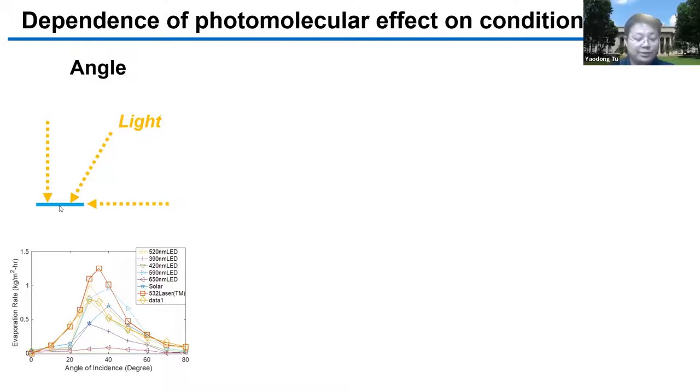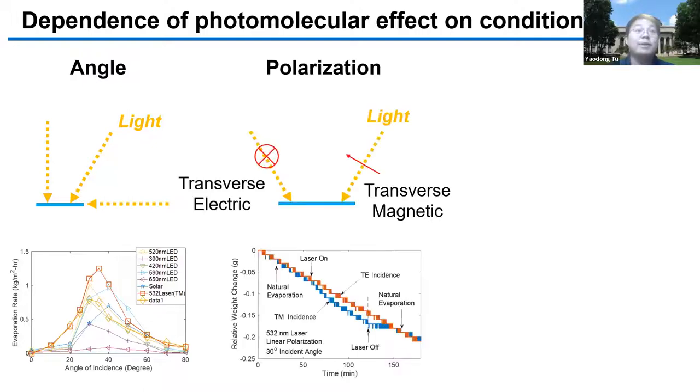To further show the need for the perpendicular electric field, we measure the polarization dependence. Here we use a linearly polarized laser, so the electric field only oscillates in the thin plane. We find out only the transverse magnetic incident light can induce the photomolecular effect, as you can see in the blue curve.